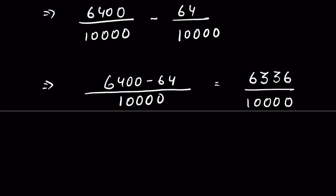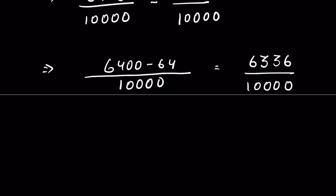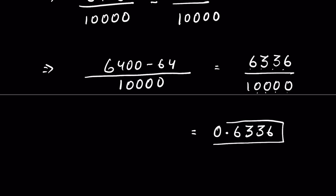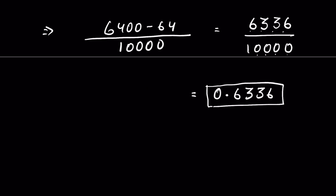We can represent this as a decimal. There are four zeros in 10,000, so we place the decimal point counting four digits: 6,336 becomes 0.6336. So in decimal form, the answer is 0.6336.